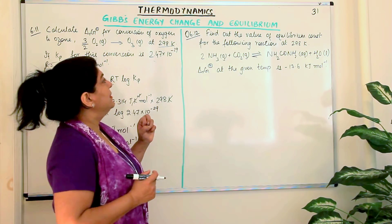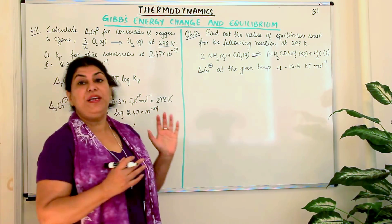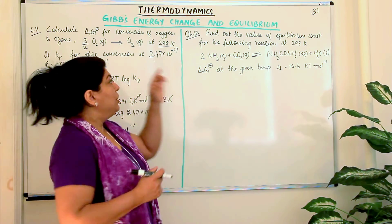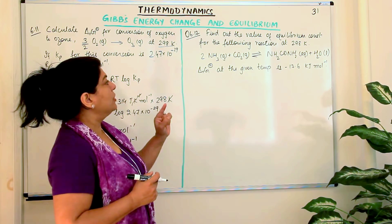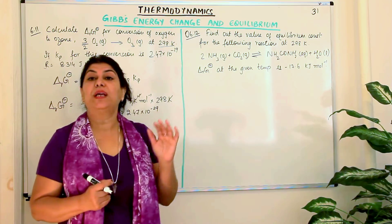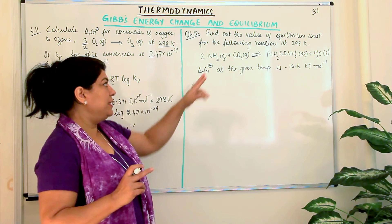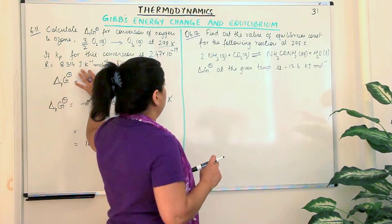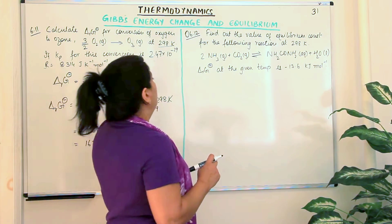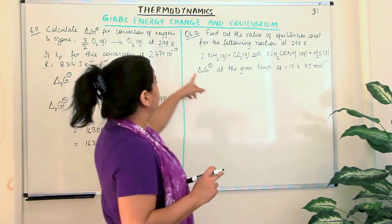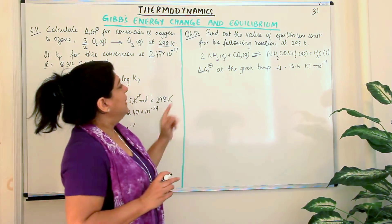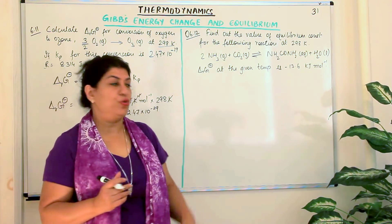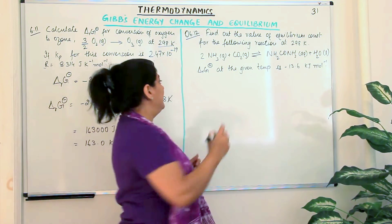Let us now move to the next problem. Here you have to find out the value of the equilibrium constant K for a given reaction at 298 Kelvin. The temperature T = 298 K and R is the gas constant — that's already known. The value of delta RG° at the given temperature is also provided. So let's solve this.